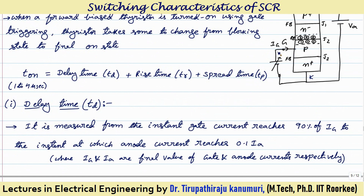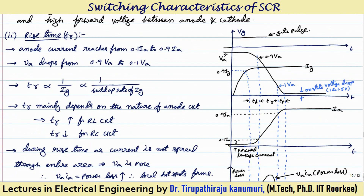Whenever the gate pulse is applied, the PN junction becomes forward biased. The current will start passing — similar to a diode circuit — the gate current Ig will not pass instantaneously, it will increase gradually. These characteristics are similar to power diode characteristics. Gradually the current will increase and by the time it reaches 0.9 times of Ig from that instant we start measuring. Then the anode current starts increasing, and the time from forward leakage current to 10% of Ia is the delay time.